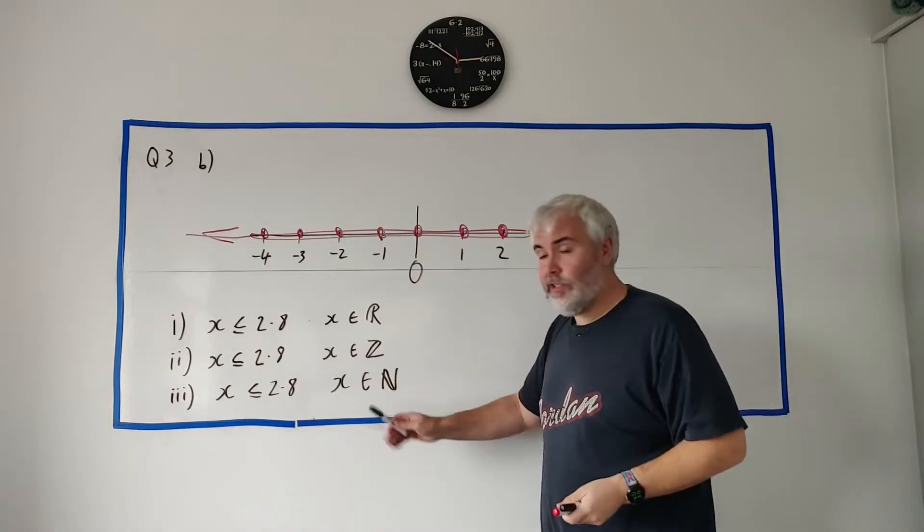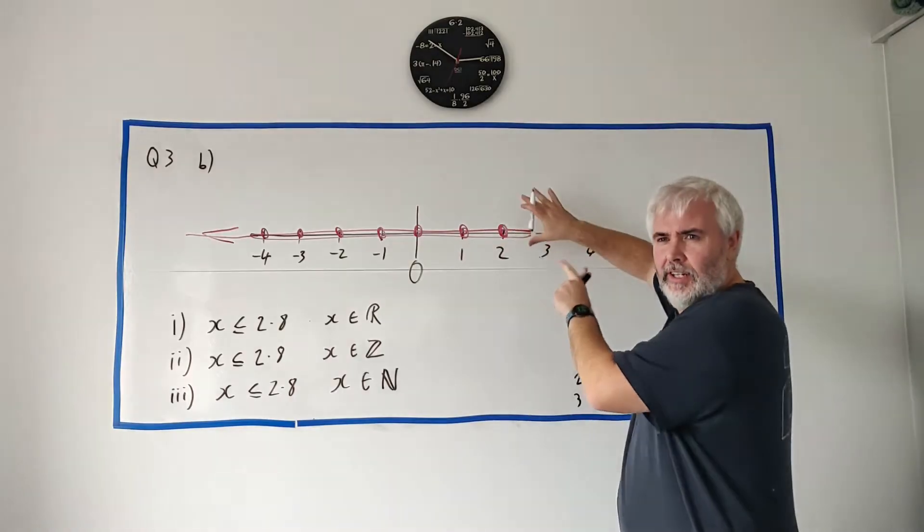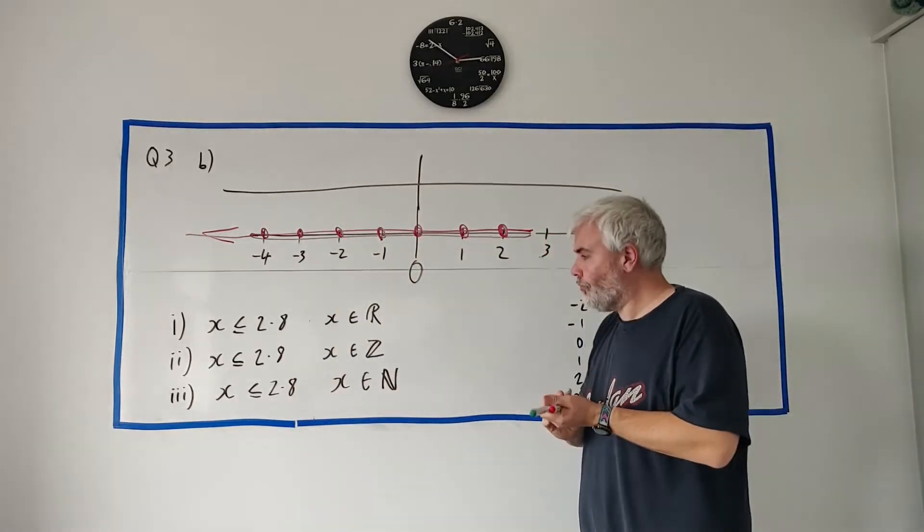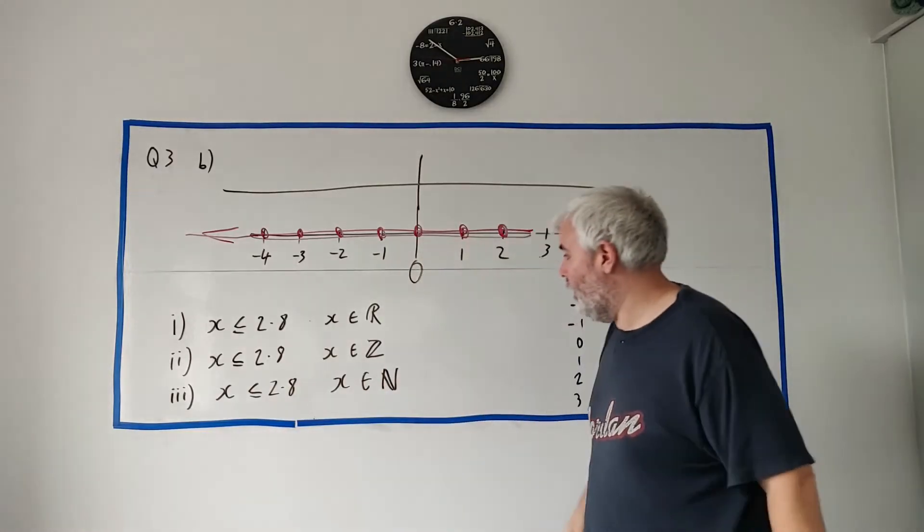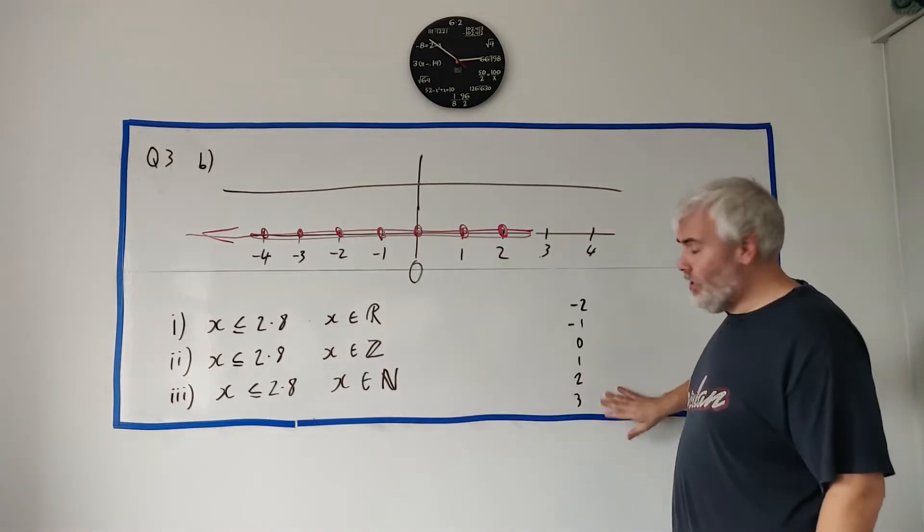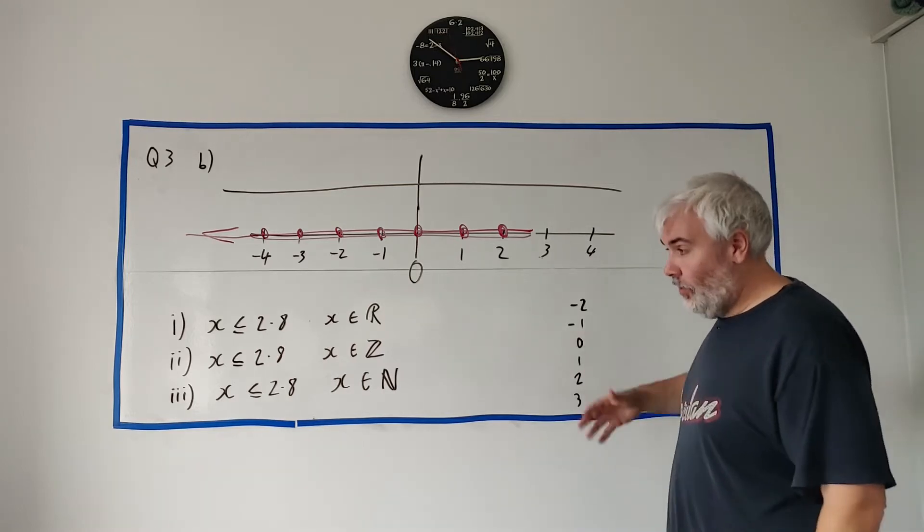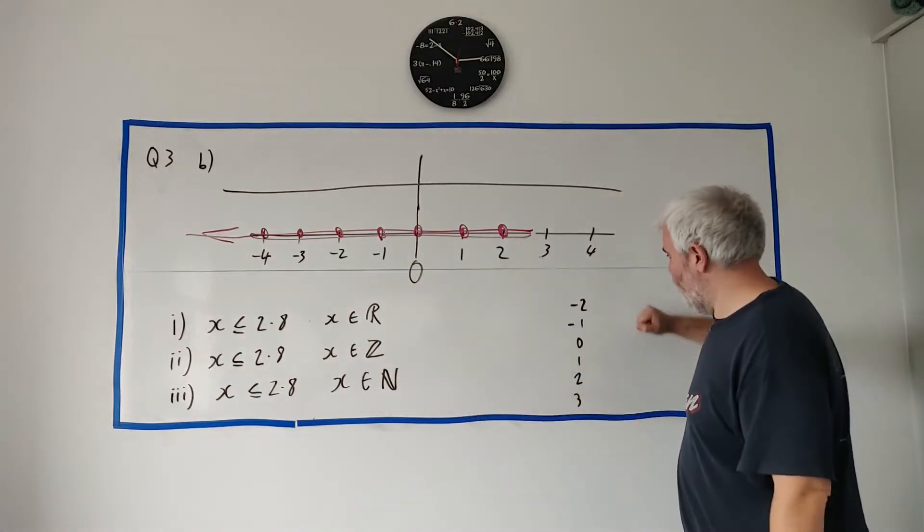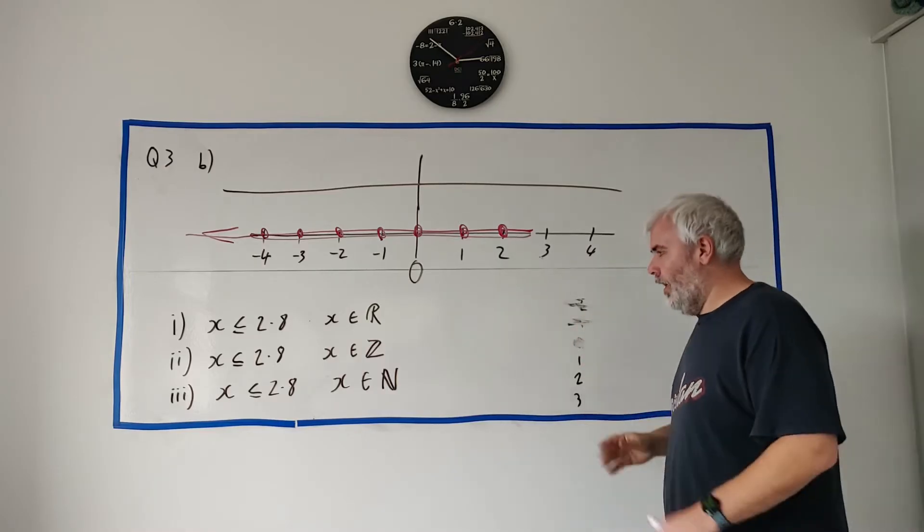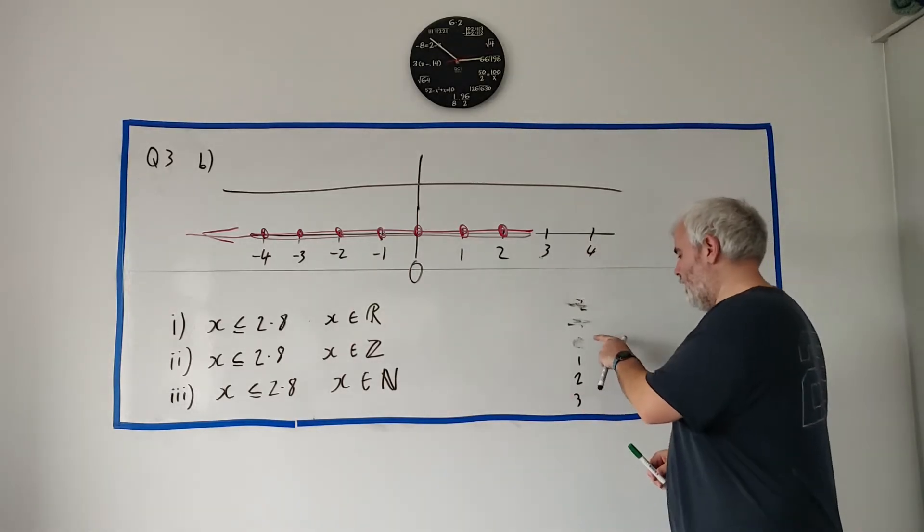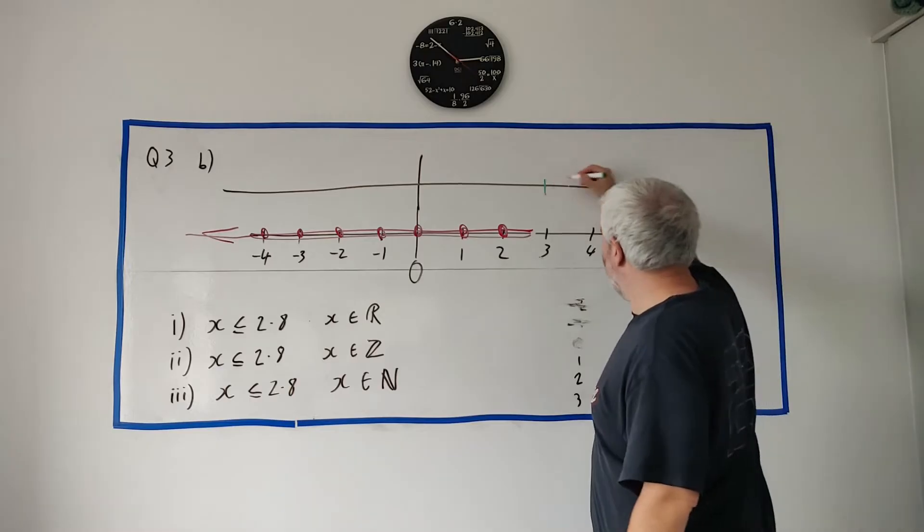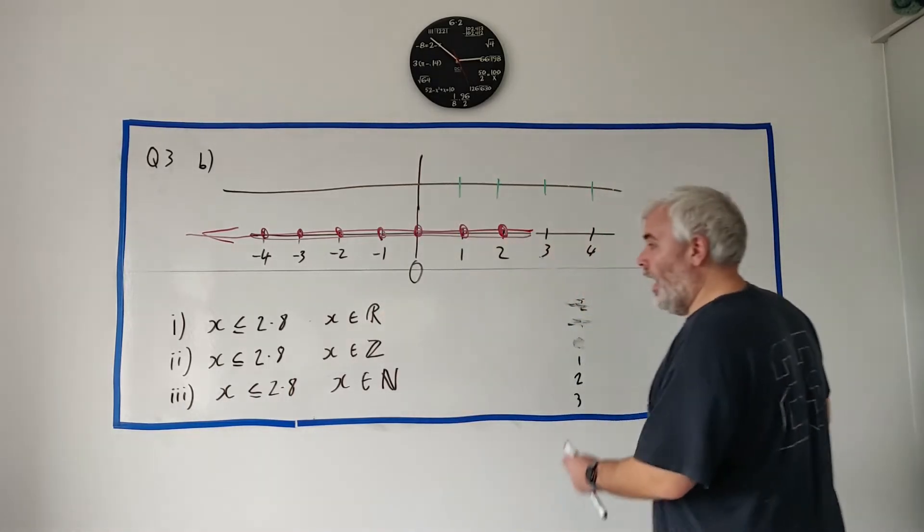And for the last one, for number 3. Down here. x is less than 2.8 again, but x is an element of N. Not Z, not R. So what is N? N looks very similar to Z. It's all the whole numbers, all the round numbers, except no minuses. And I don't think there's 0. I think 0 is not in it. But actually when I went through this question, I think 0 wasn't in it, but it did say that it would accept 0 or not 0. But I don't think it is in it. So let's see, we'd have 3, 4, 2, 1, and so on. All these.